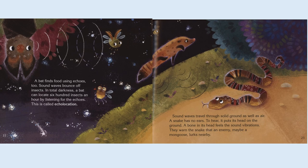Sound waves travel through solid ground as well as air. A snake has no ears. To hear, it puts its head on the ground. A bone in its head feels the sound vibrations. They warn the snake that an enemy, maybe a mongoose, lurks nearby.